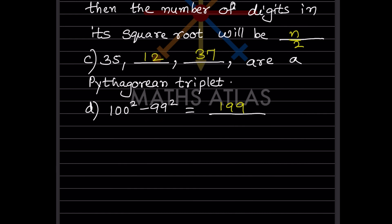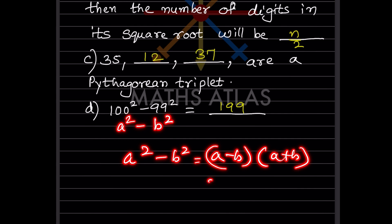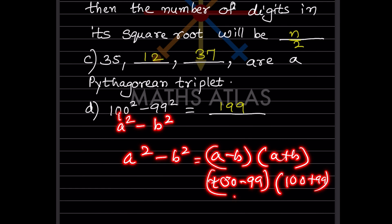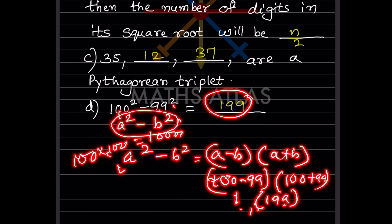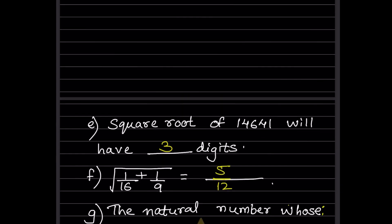Now, 100² − 99² is in the form a²−b², and the formula is (a−b)(a+b). So a = 100 and b = 99, giving (100−99)(100+99) = 1 × 199 = 199. Rather than computing 10000 minus 99², this formula gives the answer directly as 199.